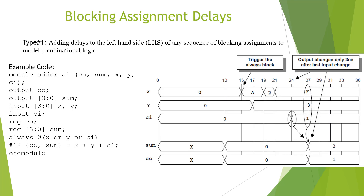In this slide let's discuss the blocking assignment delay. One way of using blocking assignment delays is adding delays to the left-hand side of any sequence of blocking assignments to model combinatorial logic. The example here is an adder code which has inputs x, y, and carry input, and we have added a delay of #12 on the LHS of these assignment statements.